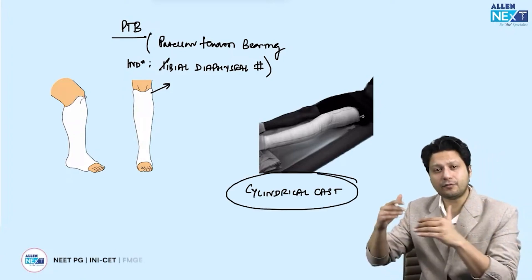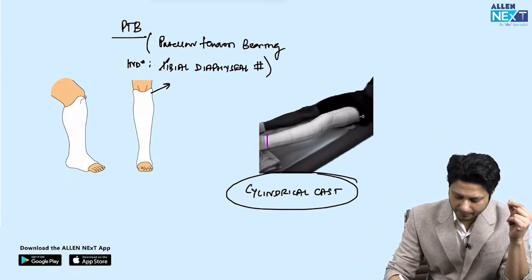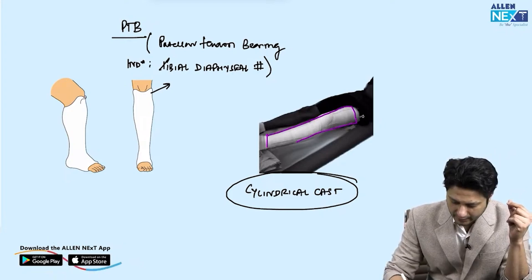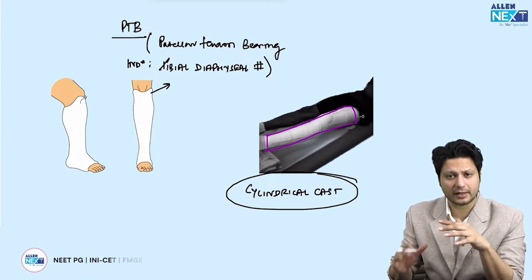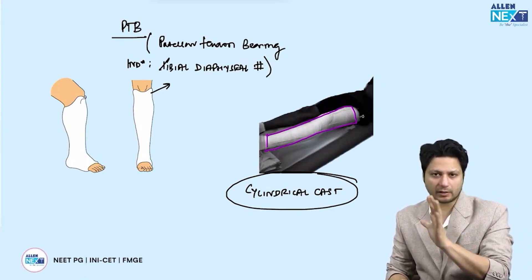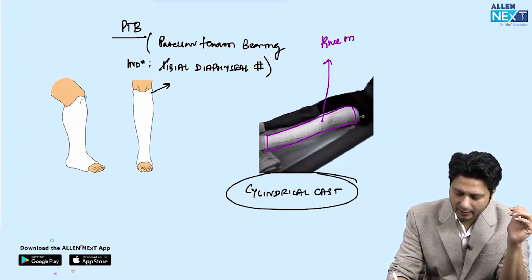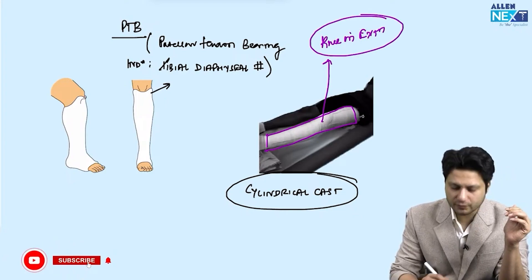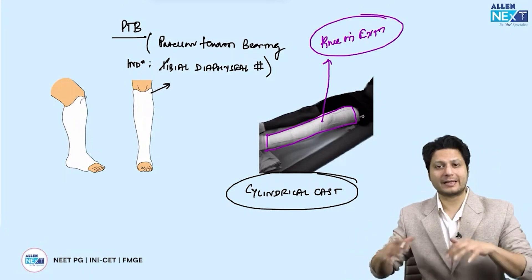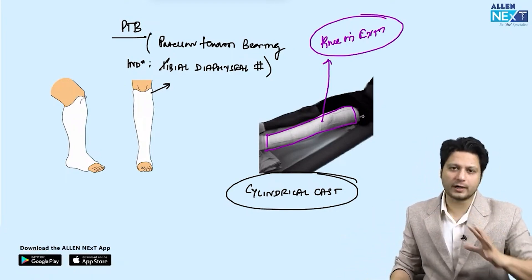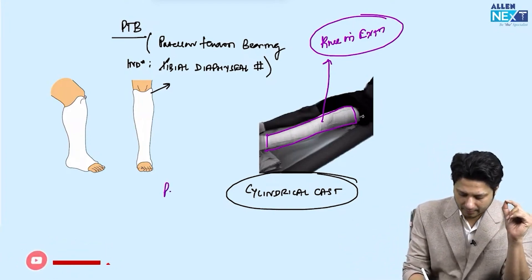The cylindrical cast is a lower limb cast that encloses the entire knee joint, from the mid-level of the thigh all the way down to five centimeters above the medial malleolus. Crucially, the knee is immobilized in extension in the cylindrical cast. In all other lower limb casts the knee is kept at around 15 degrees of flexion — only the cylindrical cast keeps the knee in extension. Its indication is patellar fractures.